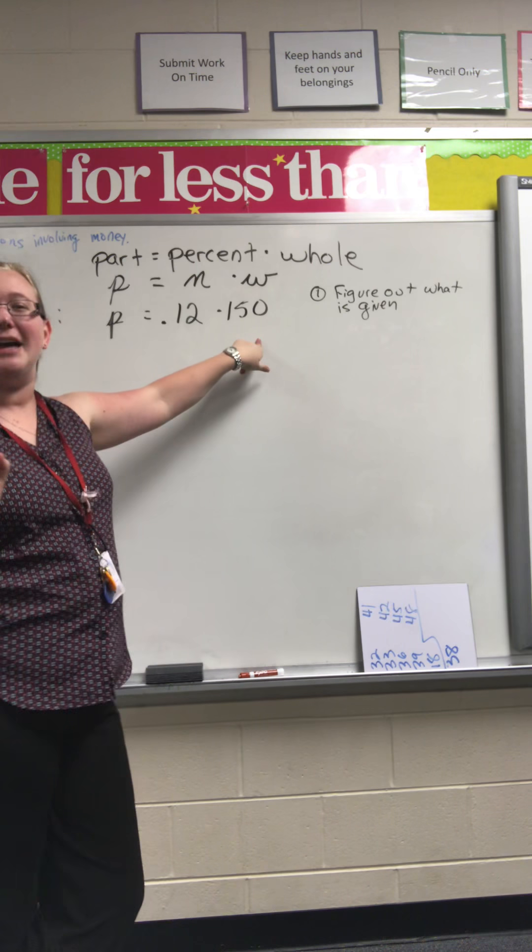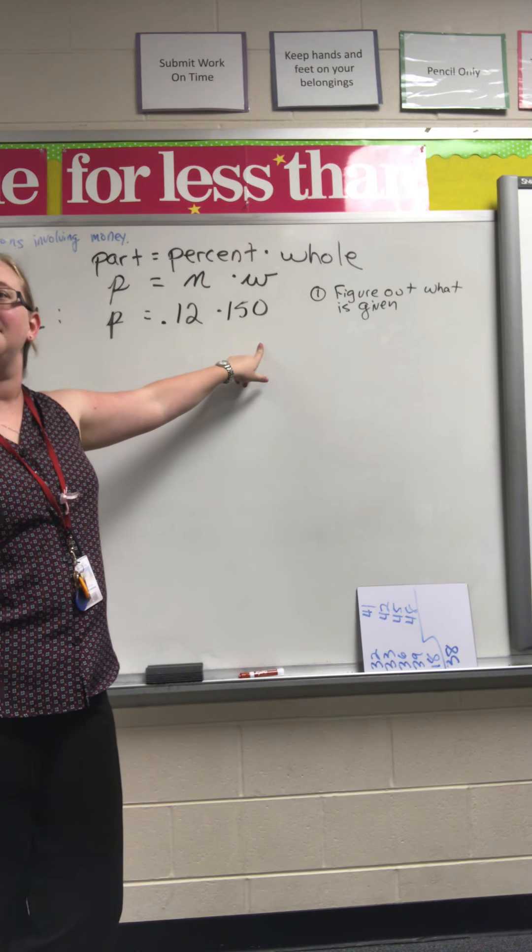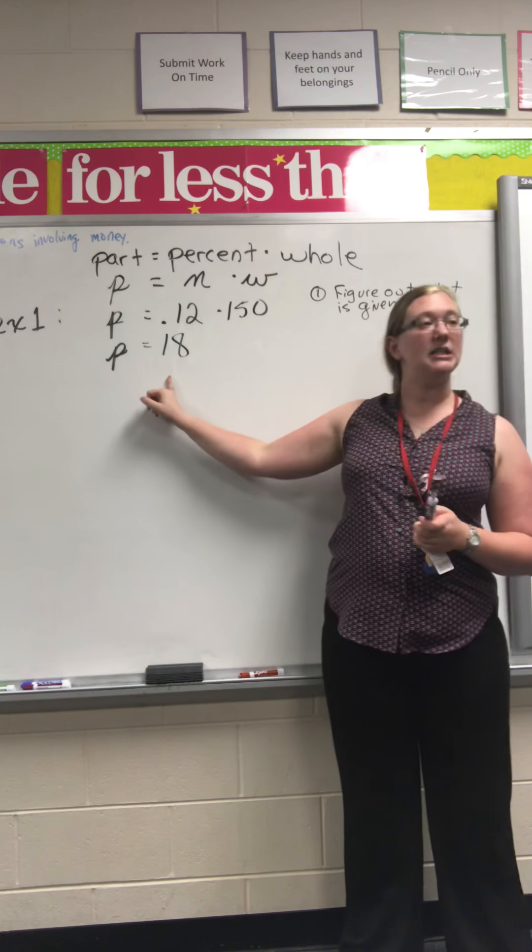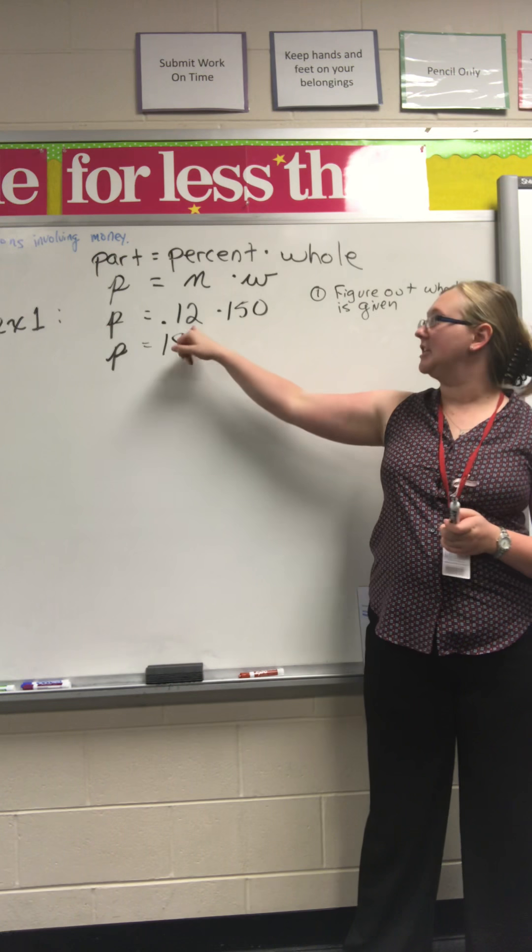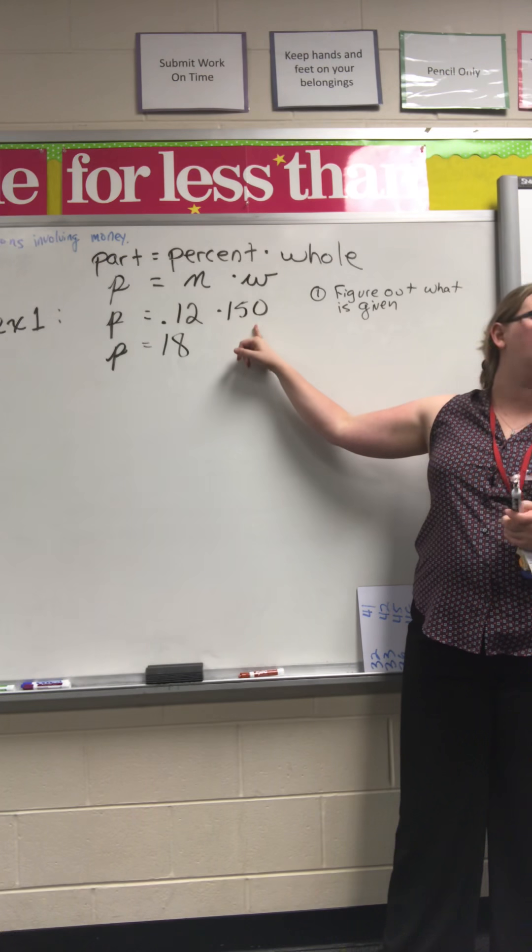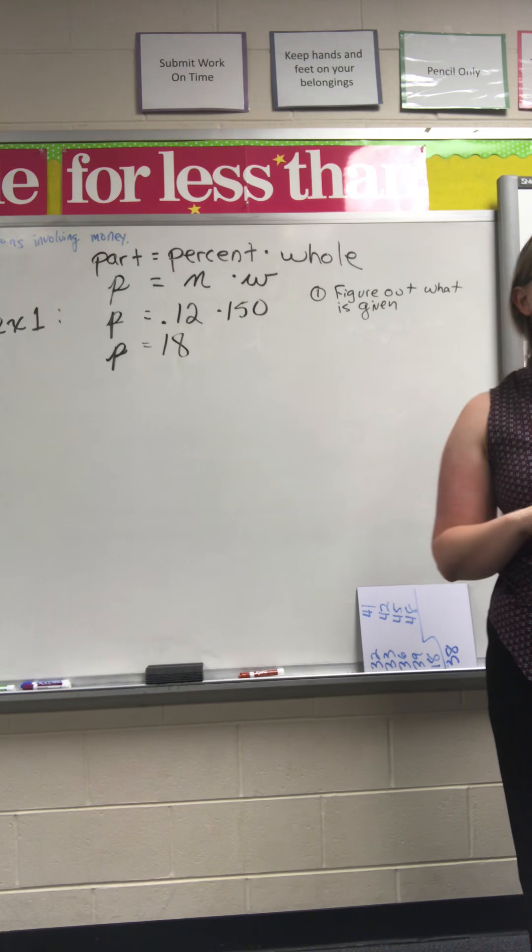0.12 times 150. Who has a calculator and can tell me what is that going to be? 18. So that means that 18 is 12% of 150. So 18 is my part. 12% is my percent. But I wrote that as a decimal by moving the decimal place. And my whole is 150. Do we have questions about this? Fantastic.